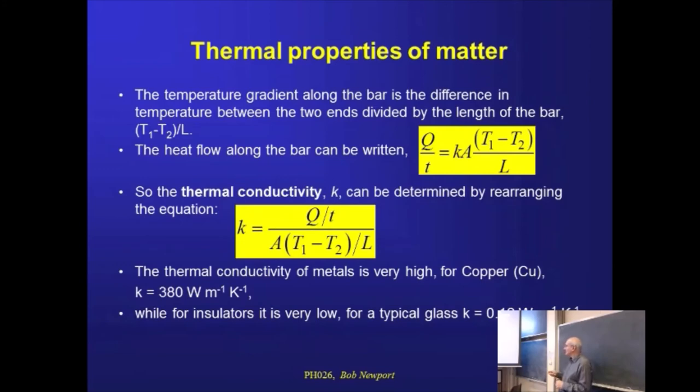And typical values, I suppose across the range, well a high one would be a metal like copper, so 380 watts per meter per degree. A low conductivity material would be something like a glass. So it's the same sort of thing as thermal expansion. Same sorts of materials at the same ends of the spectrum. And for a glass we're down several orders of magnitude, so it's well under 1 watt per meter per degree Kelvin.